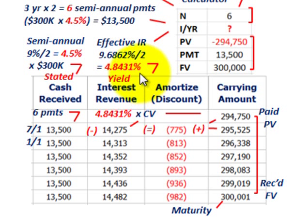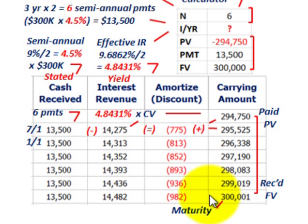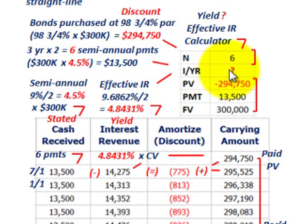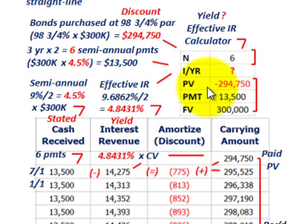We're going to calculate the effective interest rate based on the present value of our security, those interest payments, and the maturity value or future value of these bonds. Based on that, plus our number of payments, we can calculate this interest rate using a financial calculator. The calculator layout has: number of periods, the interest rate (what we have to calculate), present value, payments, and future value. You look for those keys in your calculator and fill those out.